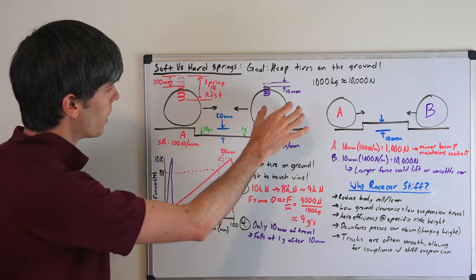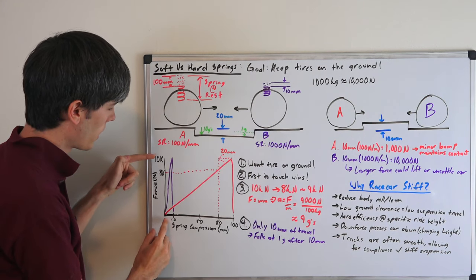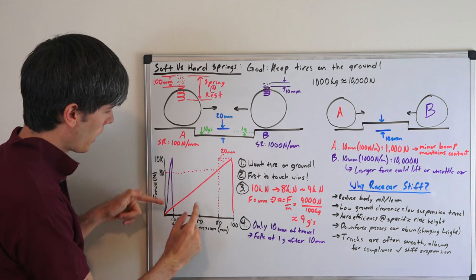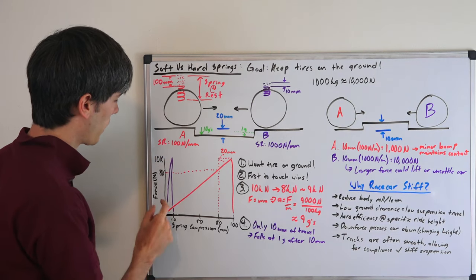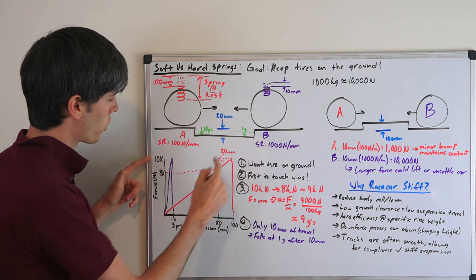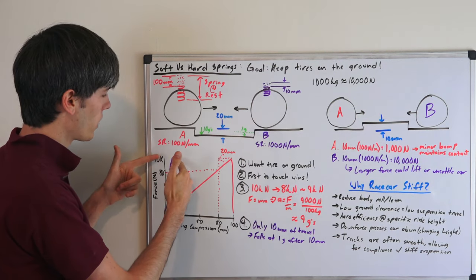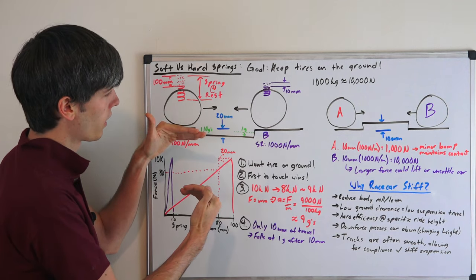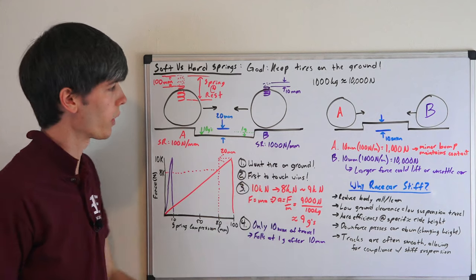Now this spring on the right, what we've got is 10 millimeters of compression. And so you can see here, it's got 10 millimeters of compression. And it's got a 10,000 kilonewton force at that. And so we want to fill this 20 millimeter gap. Well, it only has 10 millimeters of compression. So after that initial 10 millimeters of pushing that wheel down, it can't push it down anymore. And it just falls at the rate of gravity.